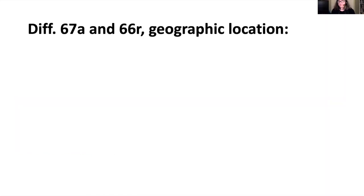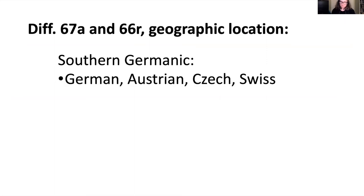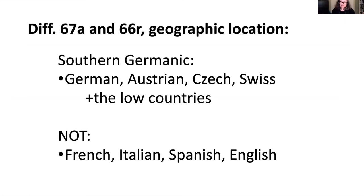Going back to differentiae 67a and 66r, we can look at the geographic locations of the manuscripts that use the same differentiae. They are almost all southern Germanic — found in German, Austrian, Czech, and Swiss locations, as well as the Low Countries, mostly Utrecht. Notably, they are not found in French, Italian, Spanish, or English manuscripts. Rupertsberg is of course also in a southern German location, so the differentiae usage very much confirms the south German context.